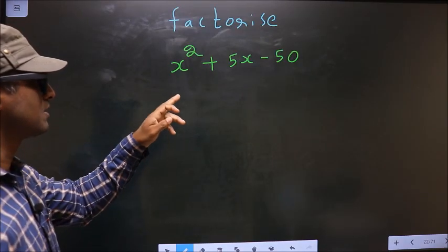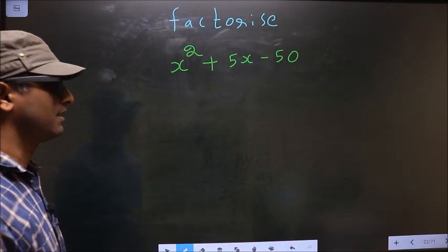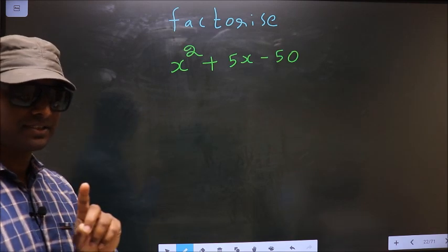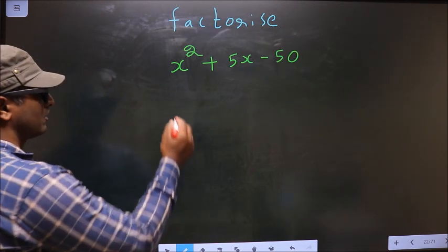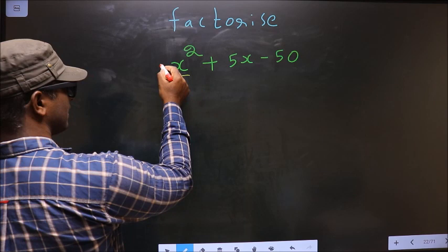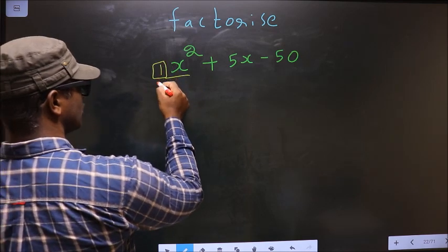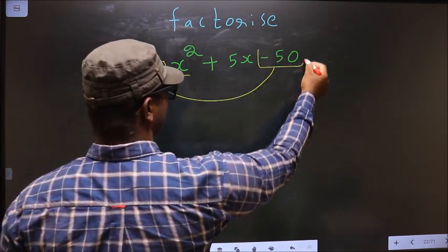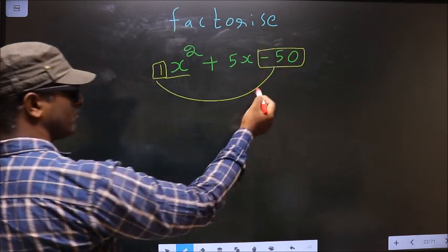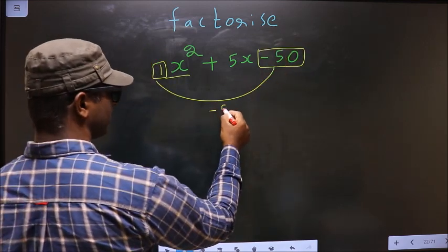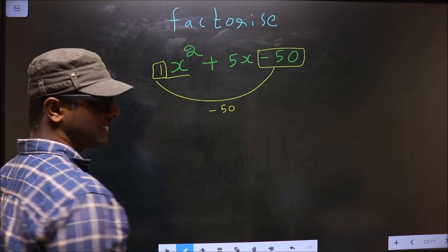Factorize x² + 5x - 50. To factorize, step 1: the coefficient of x², which is 1 here, should be multiplied to the constant, that is -50. So 1 × -50 is -50. This is your step 1.